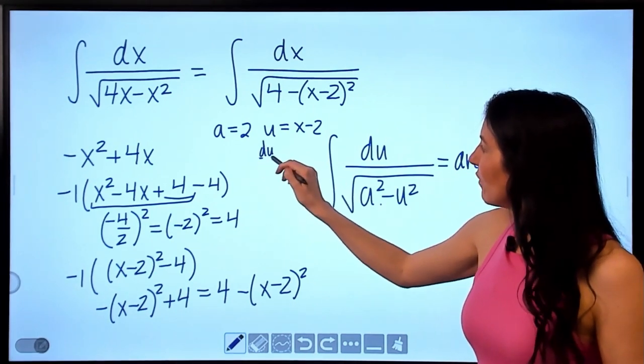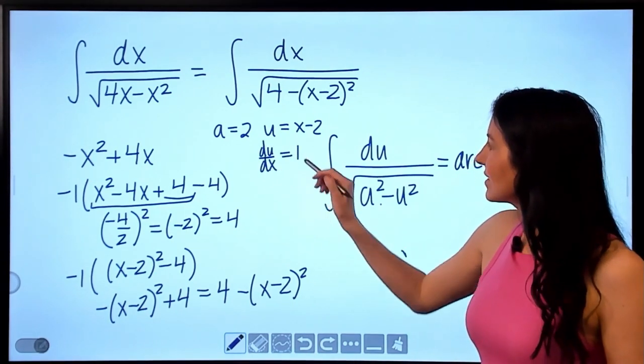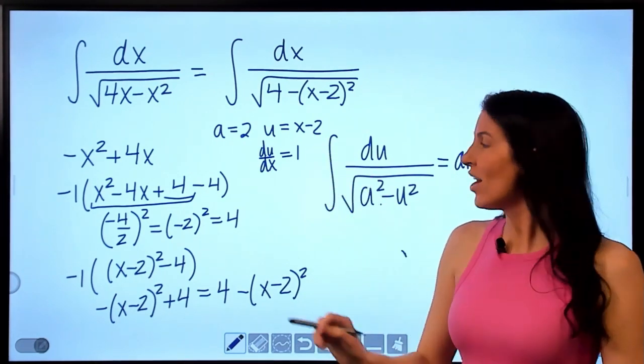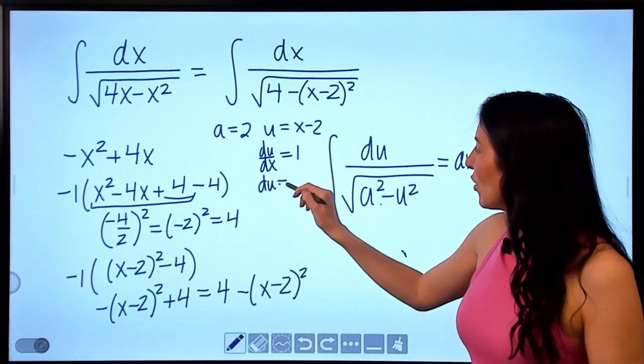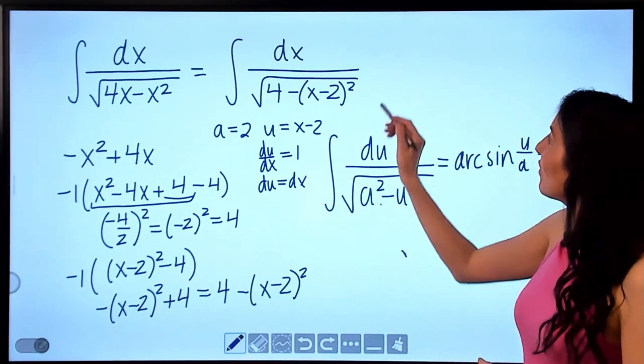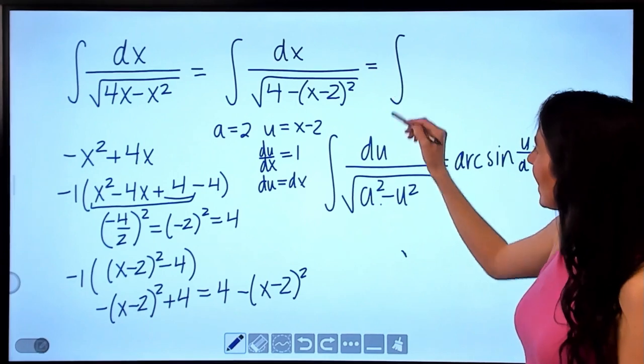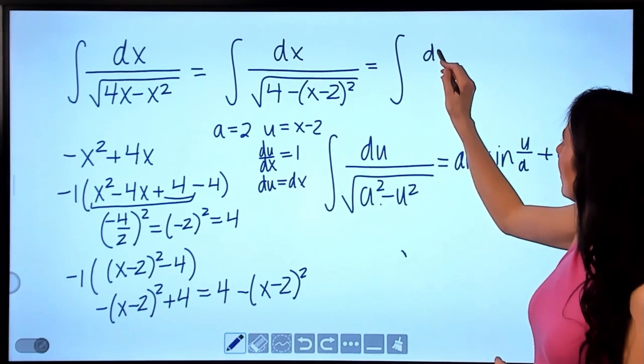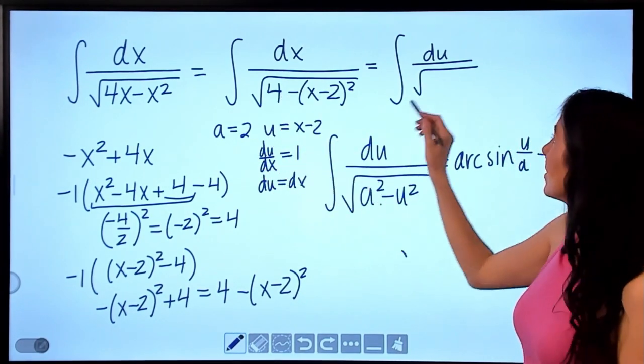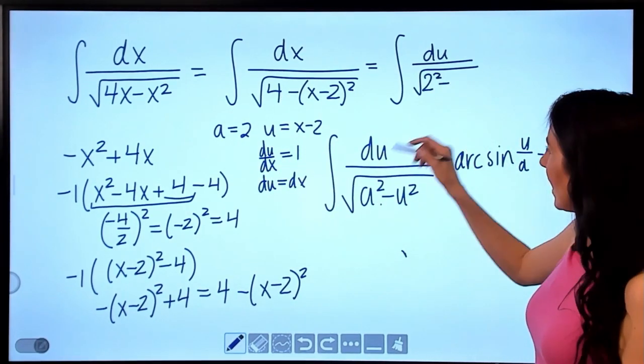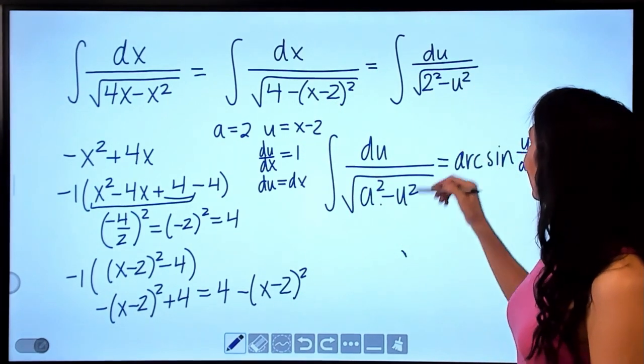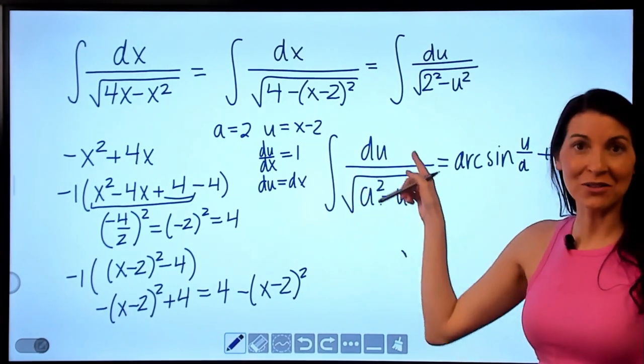And so then if I take the derivative of u with respect to x, I get 1, because the derivative of x minus 2 is just 1. And so I can see du is equal to dx if I multiply that over. So in fact, I can write this as, well, dx is du, the square root of 4, which is 2 squared, minus x minus 2 is u. So u squared.